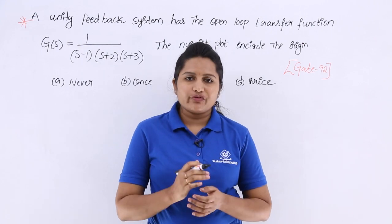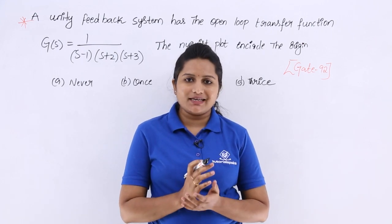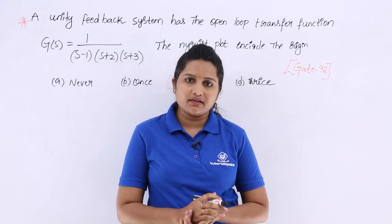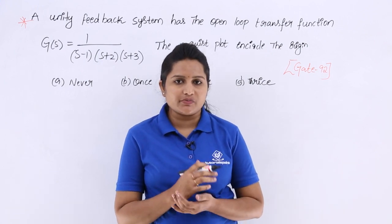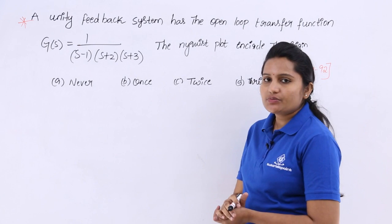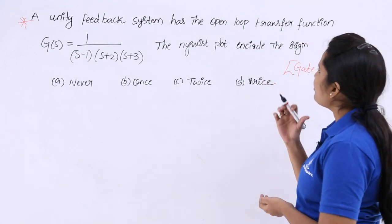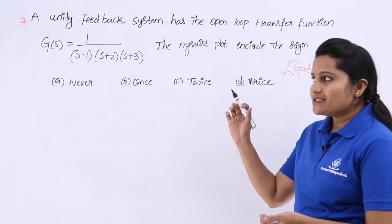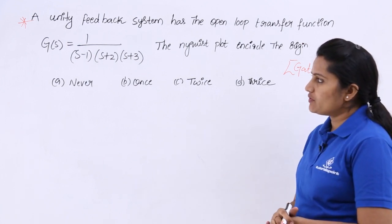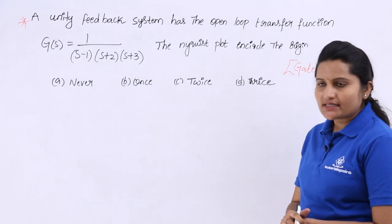In this video, we are going to solve a previous GATE problem related to Nyquist stability criteria and encirclement. A unity feedback system has the open-loop transfer function G(s) = 1 / [(s-1)(s+2)(s+3)].